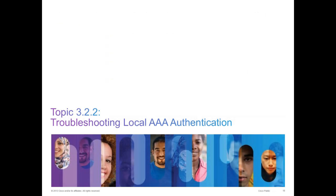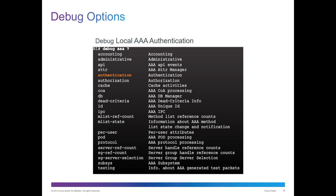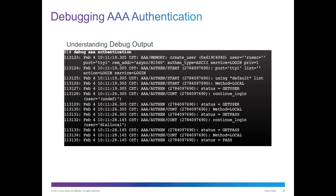Our next section is troubleshooting local AAA authentication. You can always do debug AAA and use additional subcommands underneath. The issue is understanding the debug outputs — it's not going to be the easiest for new users. Typically this is something you learn with time. You'll be looking at things such as methods, which are the lists, and the list being called — for example, the default list and the method it's calling.